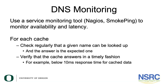For monitoring DNS, use a service monitoring tool like Nagios or SmokePing to monitor availability and latency for each cache. Check regularly that a given name can be looked up and that the answer is the expected one. Verify that the cache answers in a timely fashion — for example, below 10 milliseconds response time is what you would reasonably expect for cached data.